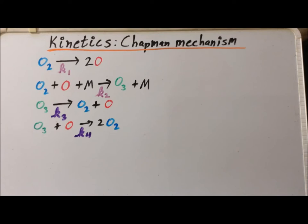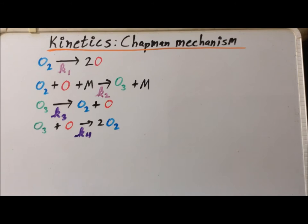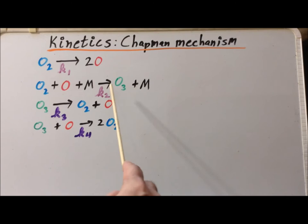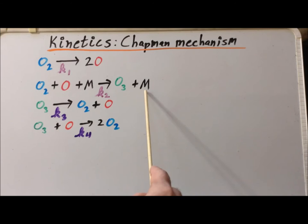There are four steps to the mechanism. In step one, dioxygen splits up into two oxygen atoms, and this occurs with the rate constant K1. In the second step, we have a collision between dioxygen and an oxygen atom and some other inert molecule, which we denote as M, which could be oxygen. In the process, we form ozone, O3, and the inert molecule continues on as before, carrying away some excess energy. This occurs with the rate constant K2.